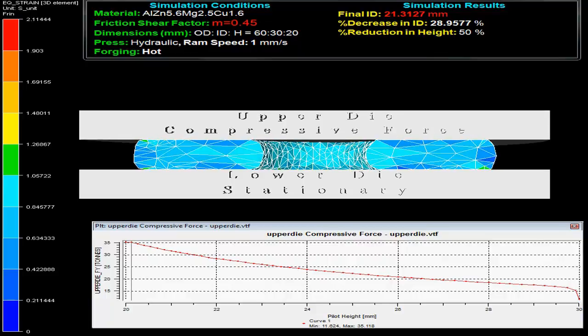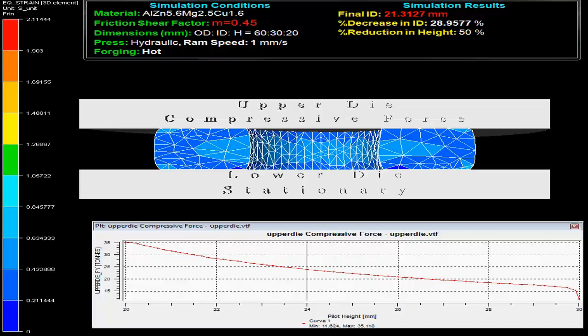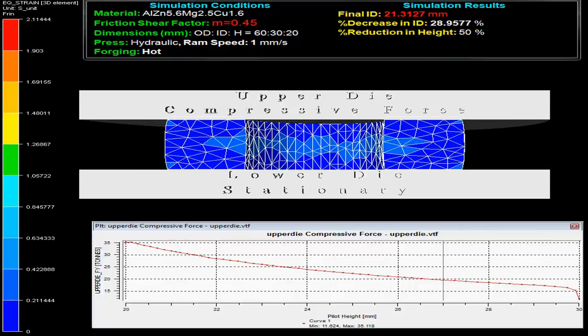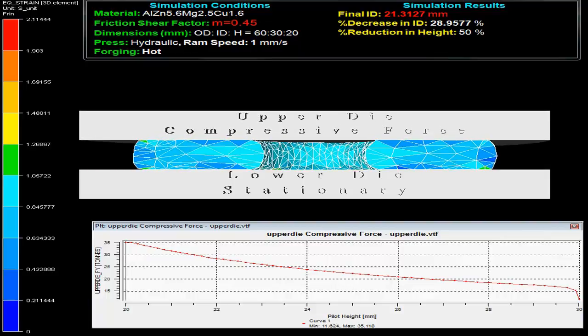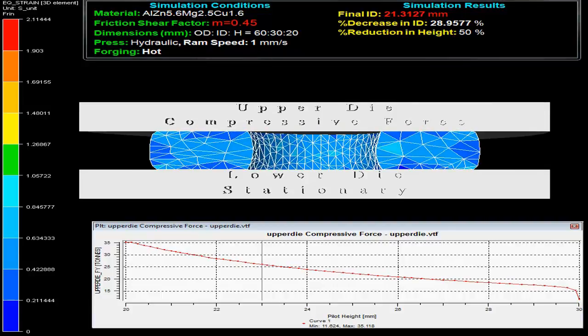The press uses hydraulic ram with speed 1 mm per second and forging is done hot. On the top right side, simulation results show the final inner diameter as 21.3 mm with decrease in inner diameter by 28.96% on 50% reduction in height.